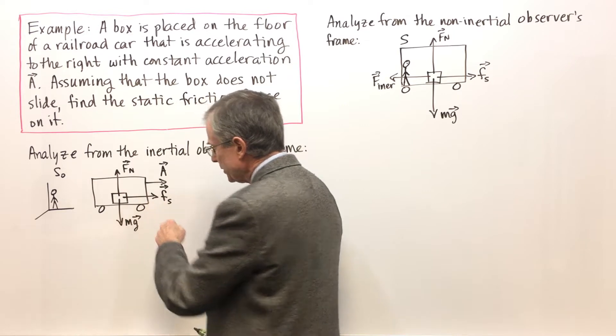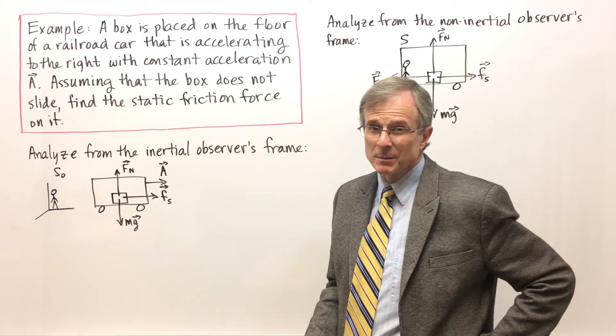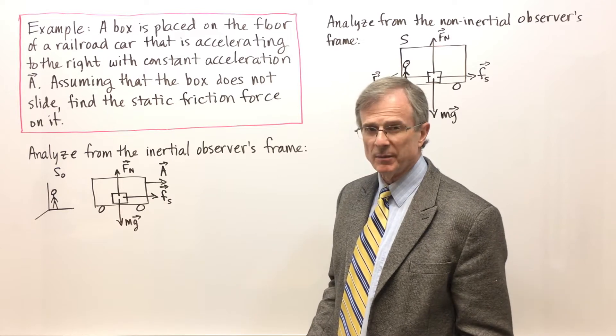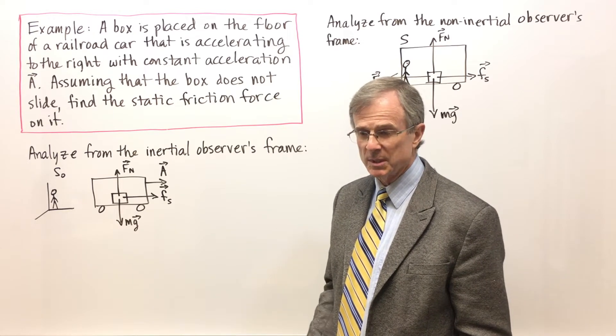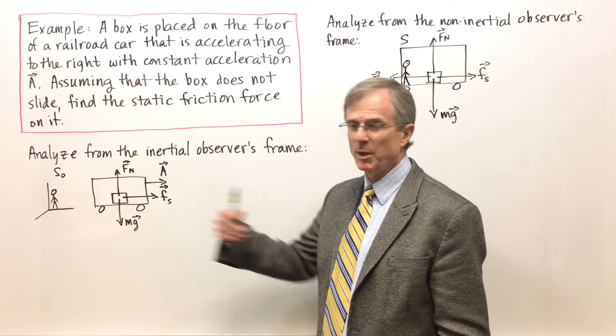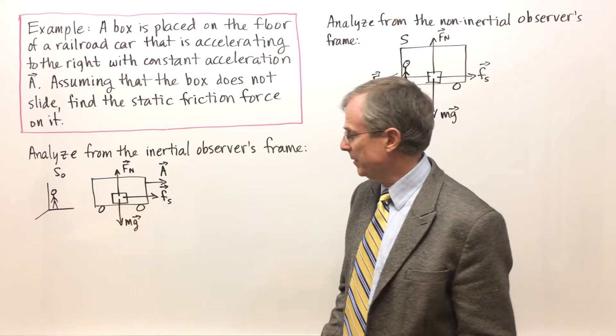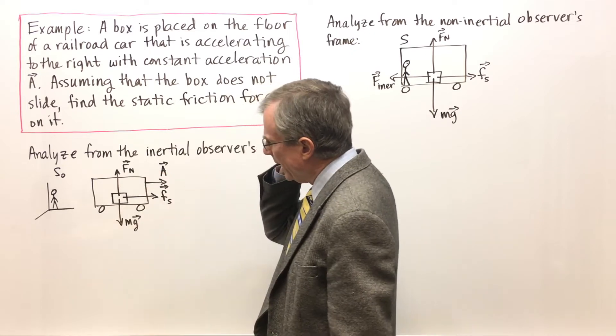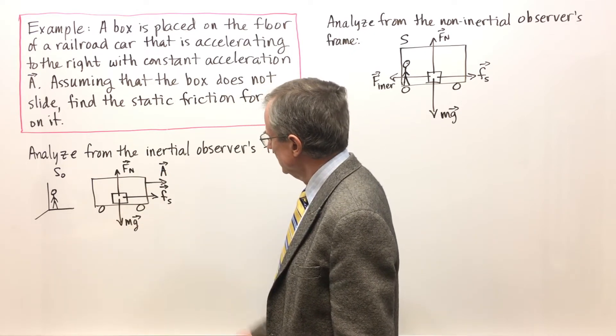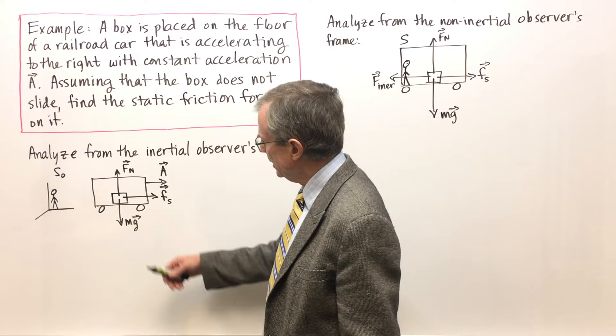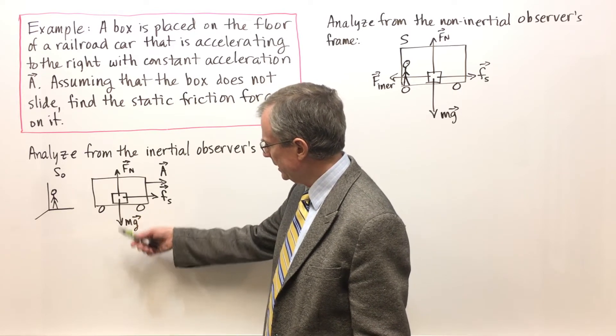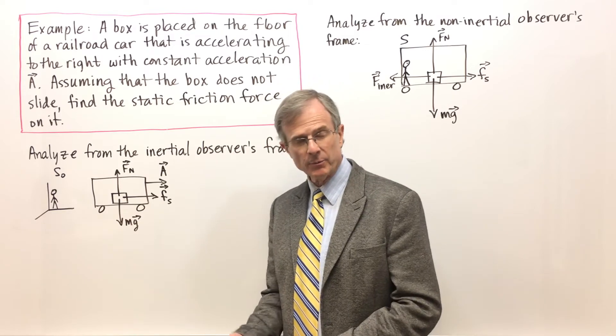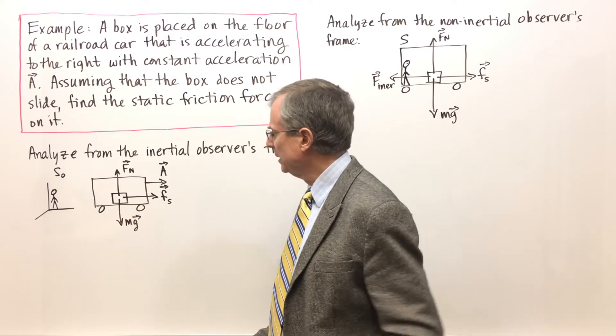So that friction force is actually going to be responsible for the acceleration of the box inside of the car. Otherwise the box wouldn't accelerate at all and the car would just accelerate and the box would hit the back side of the railroad car. So there are three forces acting on this box: the static friction, mass times acceleration of gravity acting down the weight, and the normal force of the floor of the railroad car acting up on the box.